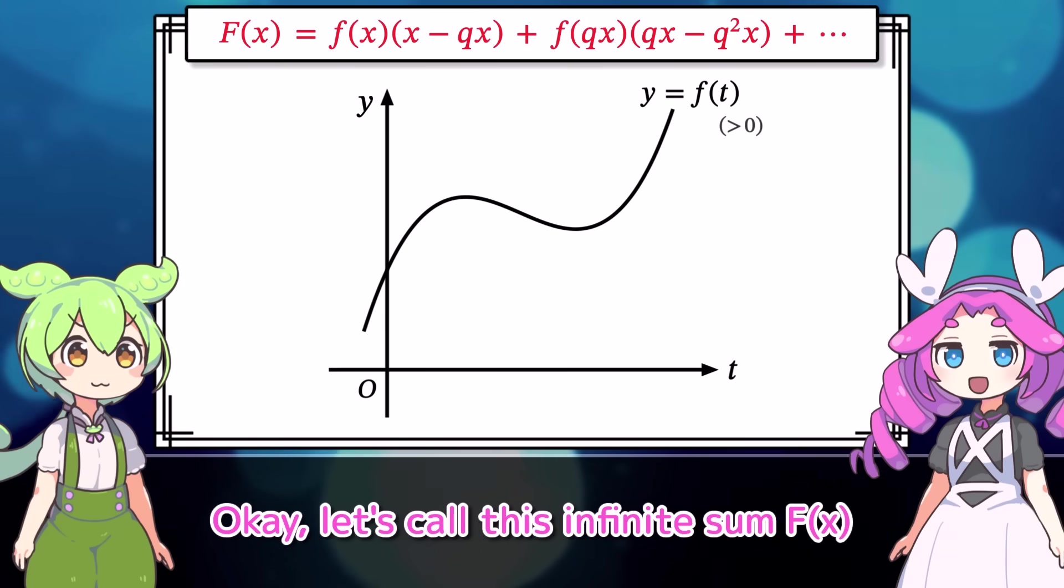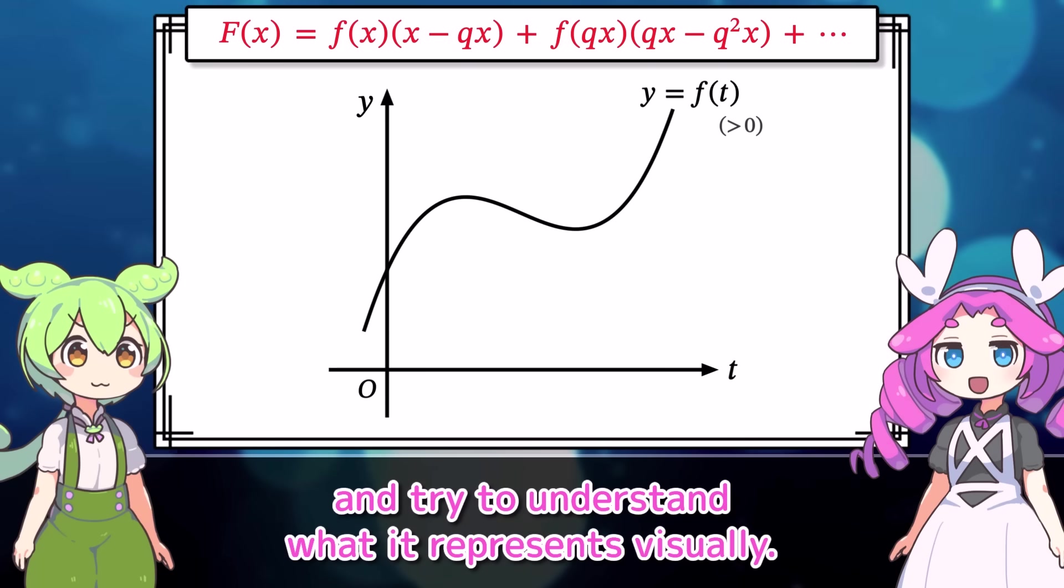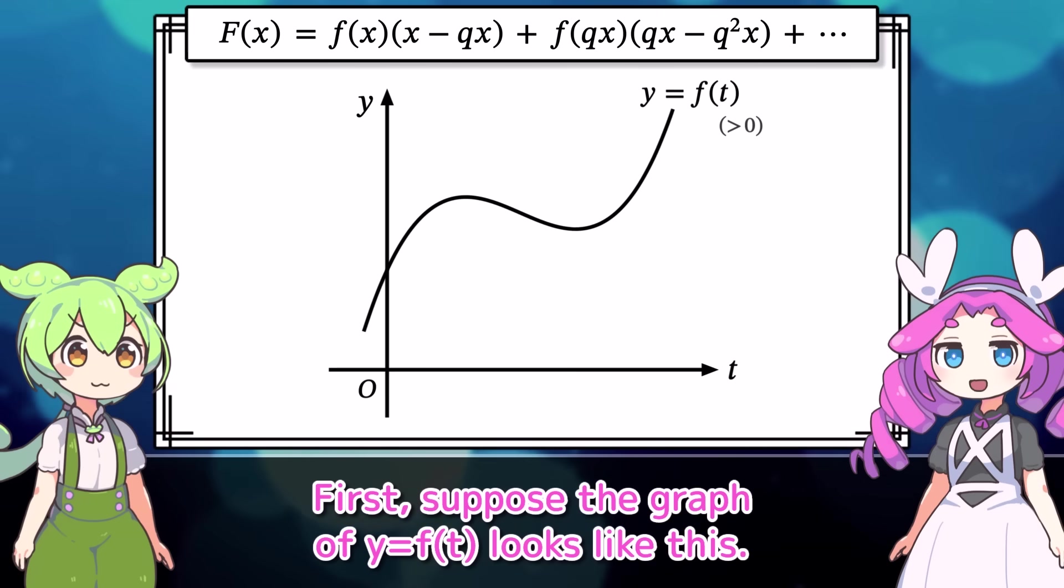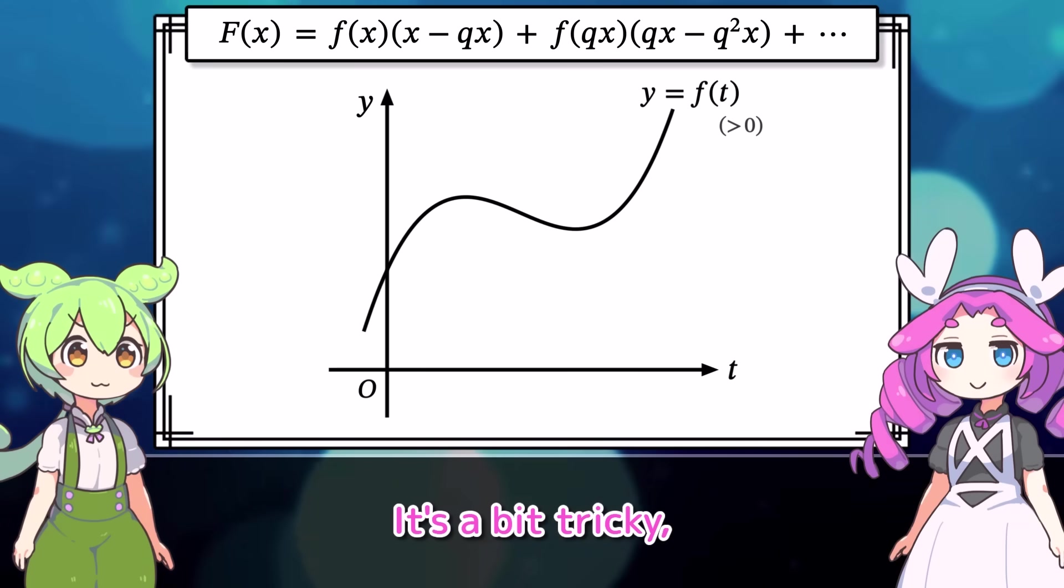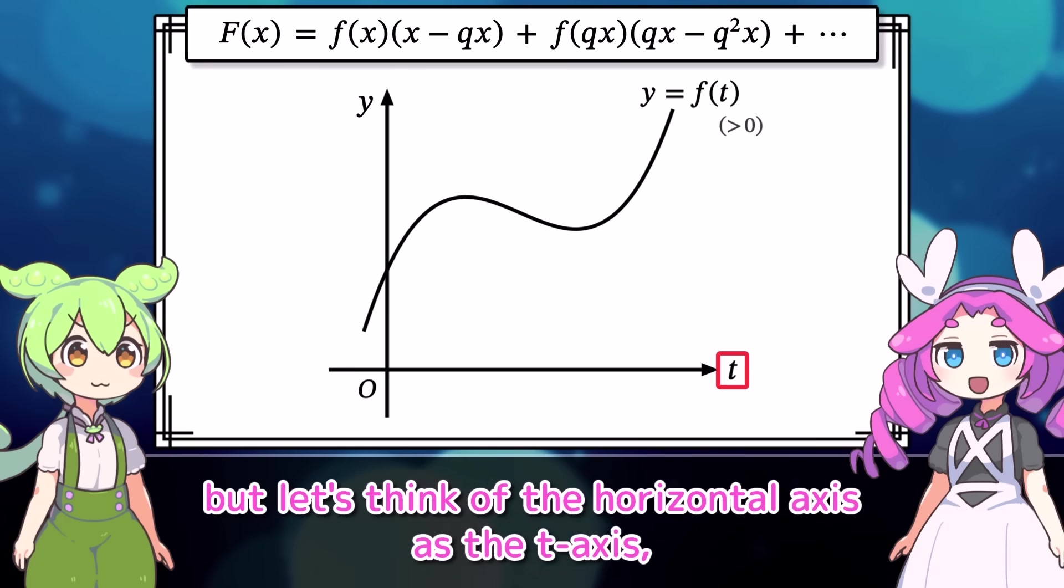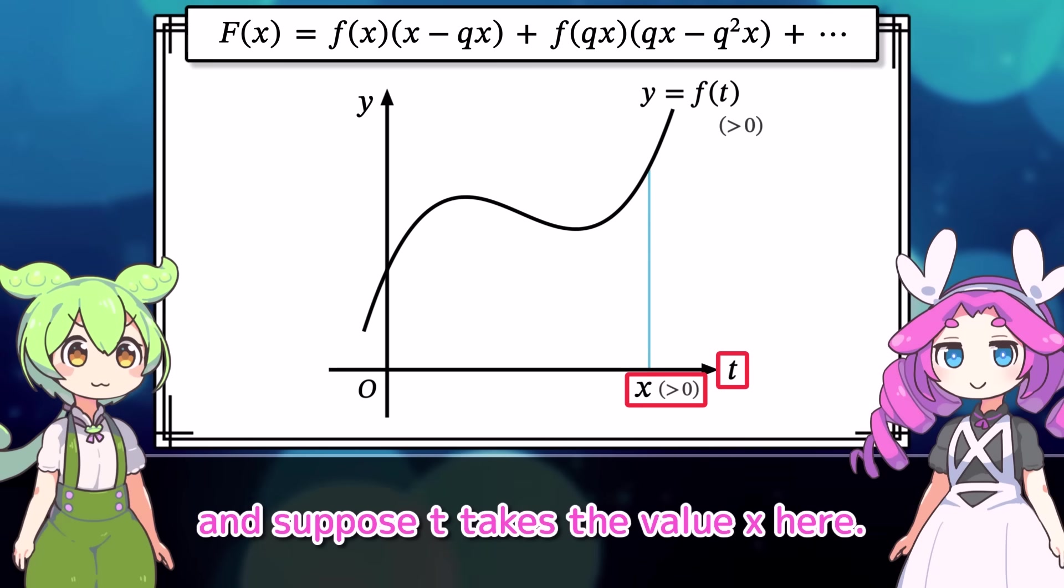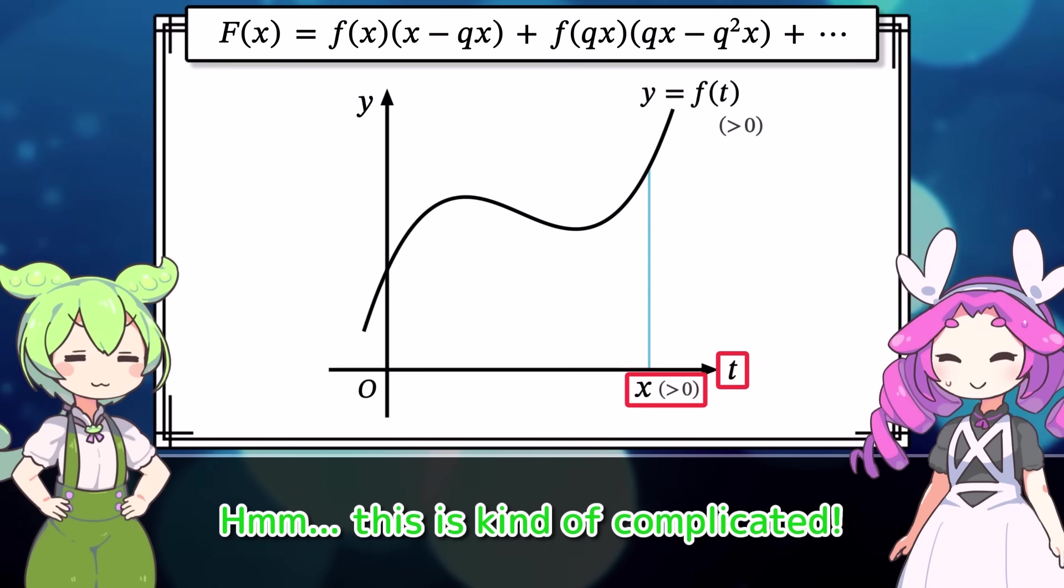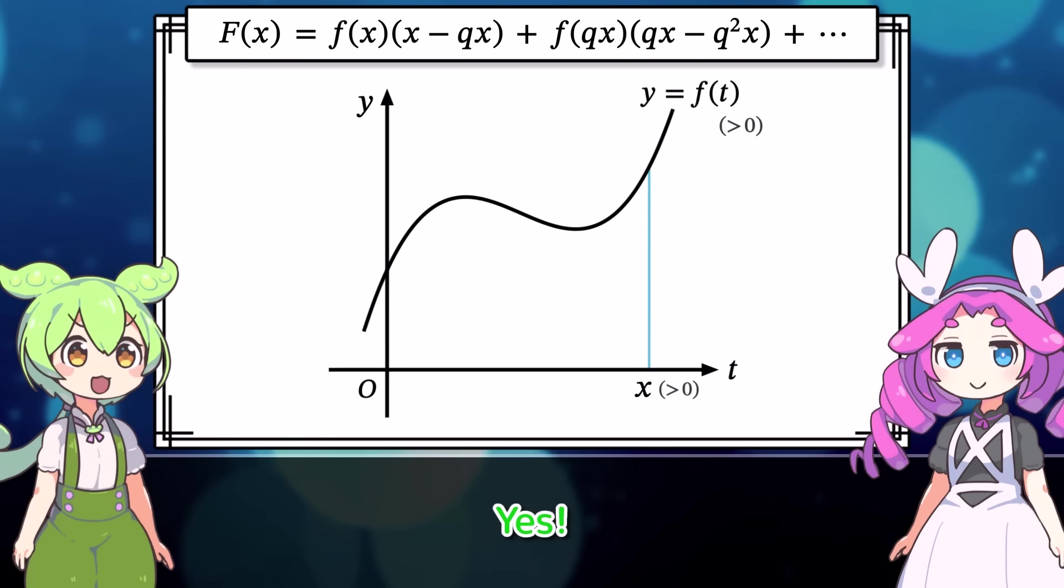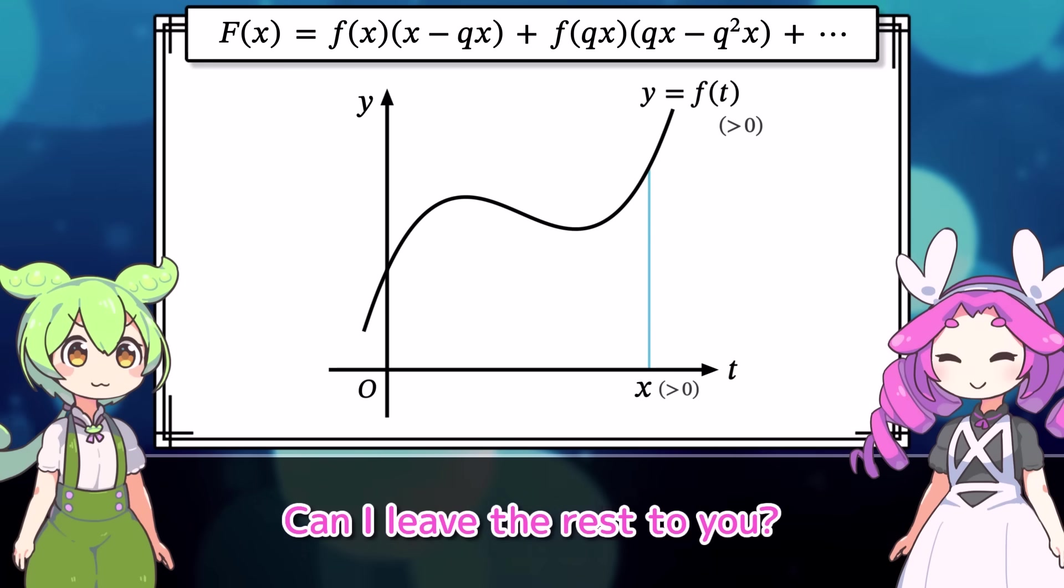Okay, let's call this infinite sum capital F of x and try to understand what it represents visually. First, suppose the graph of y equals f of t looks like this. For simplicity, we assume f of t is always positive. It's a bit tricky, but let's think of the horizontal axis as the t axis. And suppose t takes the value x here. This is for the case when x is positive. Hmm, this is kinda complicated. Now then, Zunderman. Yes. Can I leave the rest to you? Whoa, that came out of nowhere.